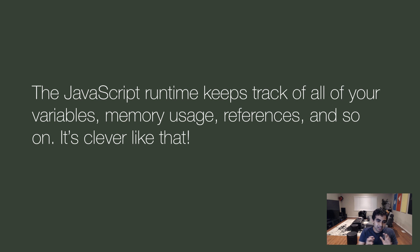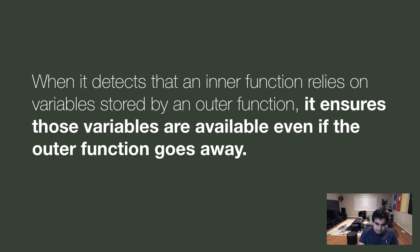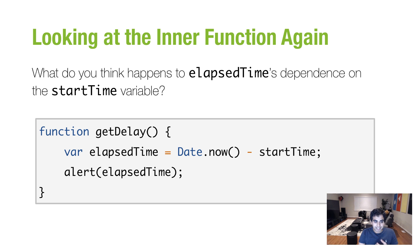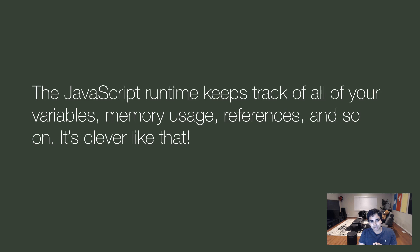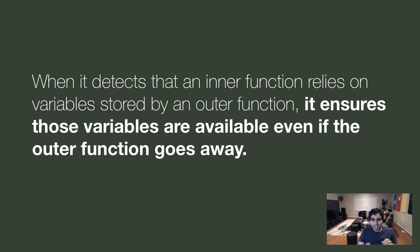Well, that's the interesting thing. See, the JavaScript runtime is really smart. It keeps track of all your variables, memory usage, references, and so on. It's kind of clever like that. Now, when the runtime detects that an inner function relies on variables stored by an outer function, as in this case, getDelay is relying on a variable, in this case startTime, stored by the outer function, which is stopwatch, what it does is this. It ensures that those variables are available even if the outer function goes away.